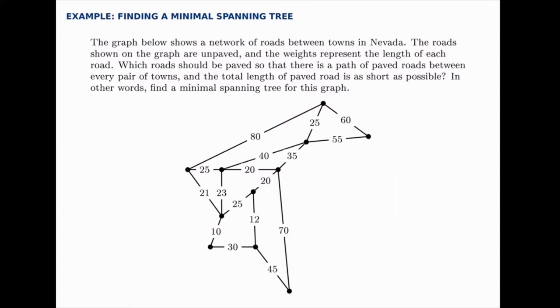To do this we're going to start by adding the shortest length that we can without creating a loop. Because if we create a loop we no longer have a tree, but we'll add the shortest length we can at each step.